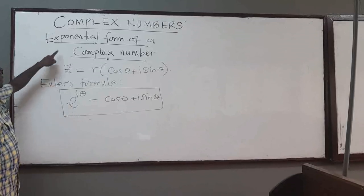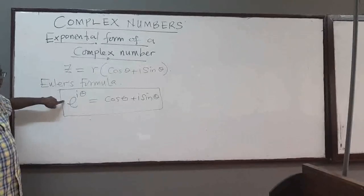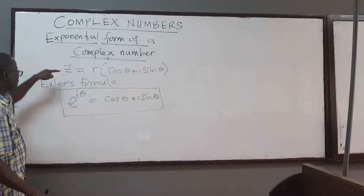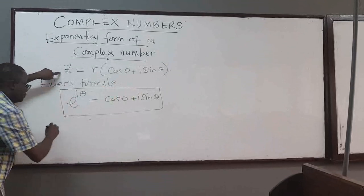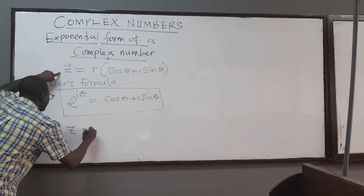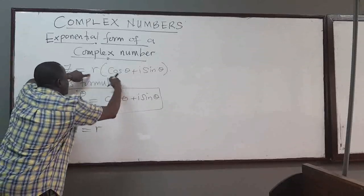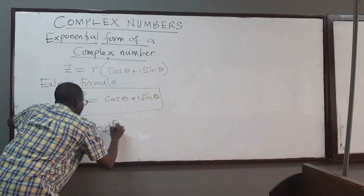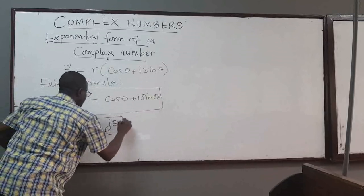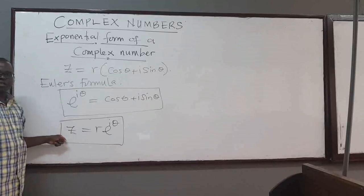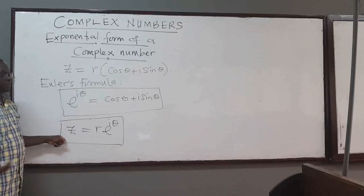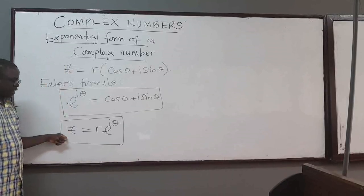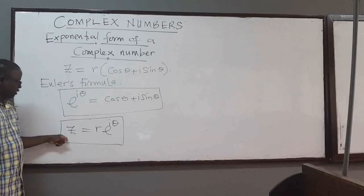You can see how you get the exponential form of a complex number using Euler's formula. We know that what is in brackets — cosine theta plus i sine theta — can be written as e to the i theta. Therefore, the exponential form of any complex number z can be written as r times e to the i theta. That equation is called the exponential form of a complex number, and it's very powerful.